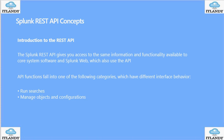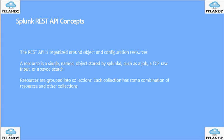There are some nice resources at the end of this session, and they reference the list of all the REST API endpoints and operation processing for creating, deleting, and assigning results. The REST API is organized around object and configuration resources. A resource is a single named object stored by Splunk, such as a job, a TCP raw input, or a saved search — this is a bit similar to Python.